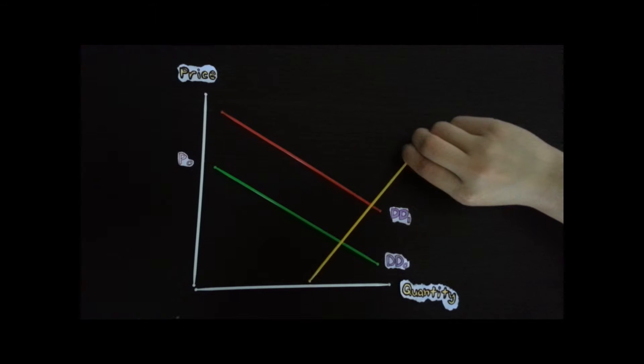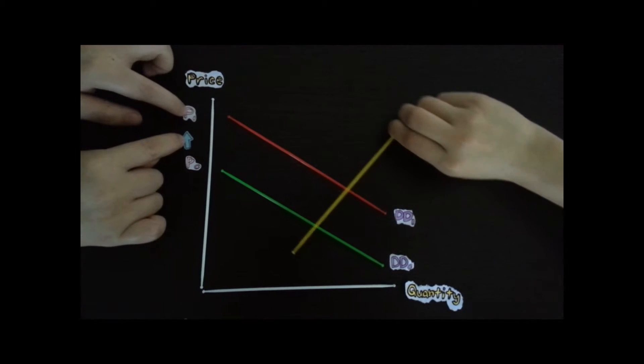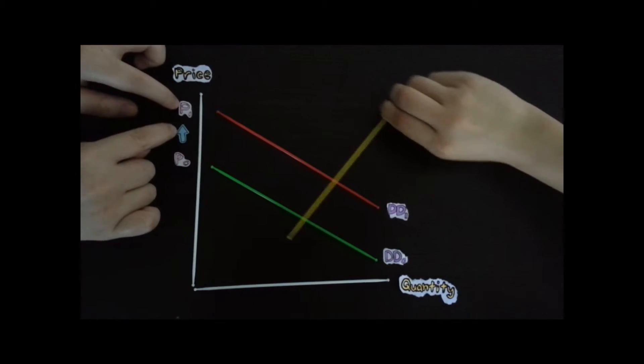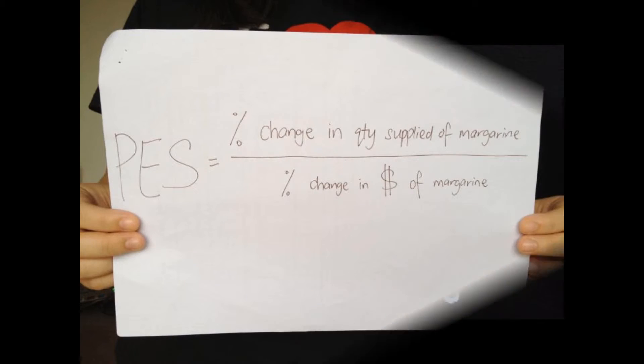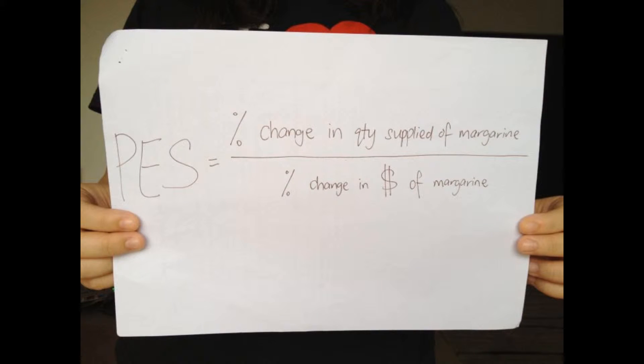PES measures the responsiveness of quantity supplied of a good due to a change in the price of the good itself. It can be measured as the percentage change in quantity supplied of a good divided by the percentage change in the price of the good.